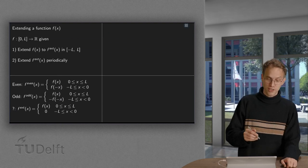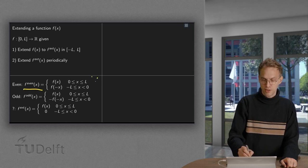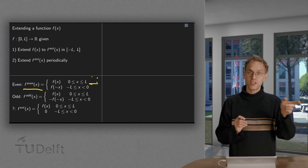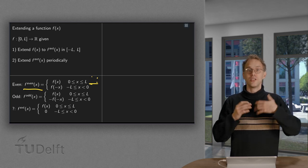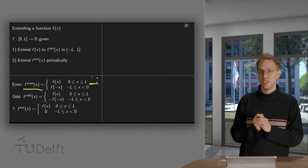So a common extension is for example the even extension. So you take f(x), the normal f(x) between 0 and L, and then you say between minus L and 0 I take f of minus x. So then I get an even function, and that's why this is called the even extension of f(x).